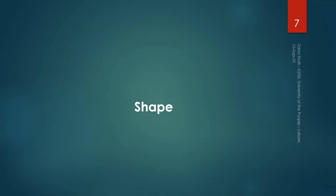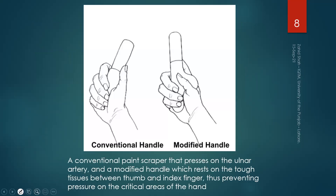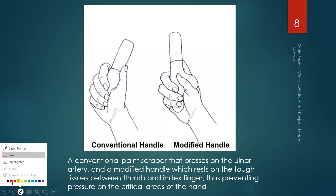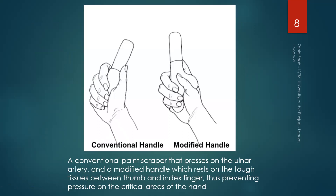First we will discuss how the shape of a hand tool is important. Here is an example of a conventional paint scrapper on the left side, having a straight cylindrical handle. If we use this scrapper, a lot of pressure will be exerted by the handle on part of the palm, pressing the ulnar artery on the soft tissue, which will cause pain in the long run.